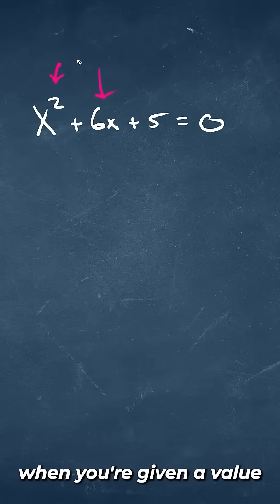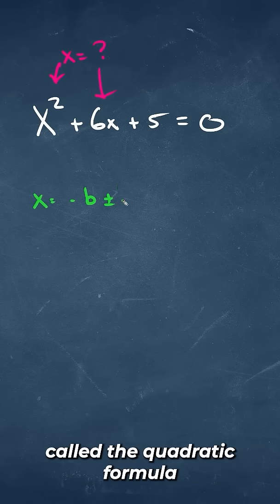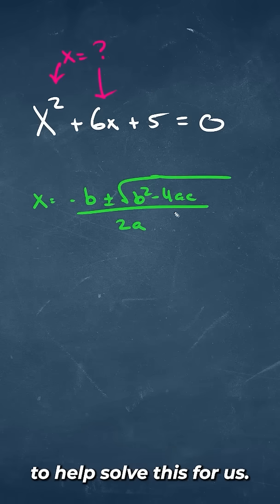How would you solve for x when you're given a value of x squared and x? We're going to use something called the quadratic formula to help solve this for us.